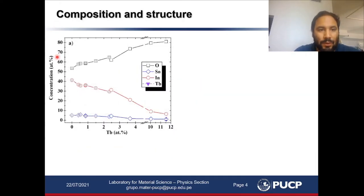Here I'm showing you the elemental concentration versus the terbium concentration of the samples we have grown, and we will be focusing on samples in this concentration range of terbium due to the fact that for higher concentrations we will have the concentration quenching effect of the luminescence.